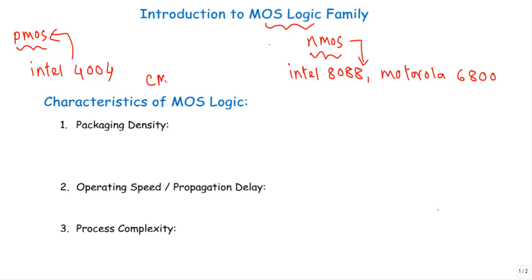All current MOS-based designs are implemented using complementary MOSFET, that is CMOS, which uses both P-type and N-type MOSFET. Although MOS logic circuits are obsolete technology, you will find applications of PMOS or NMOS logic circuits in many advanced CMOS technologies, so I will show some characteristics and operation of P-type and N-type MOS logic circuits.